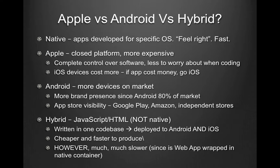Now that we understand the background, the question is whether to go Apple vs Android vs Hybrid. Native apps are apps developed for specific operating systems, like iOS and Android. They feel right and are fast and smooth. Apple's closed platform means they have complete control over the software, which means less to worry about when coding. For example, Android comes in many different phones and many different sizes, and many phones have different versions of Android.